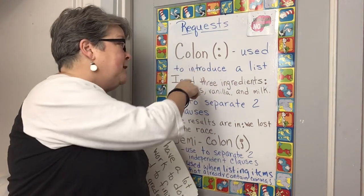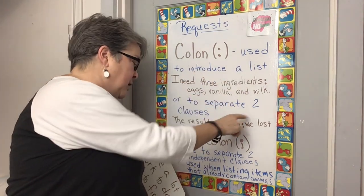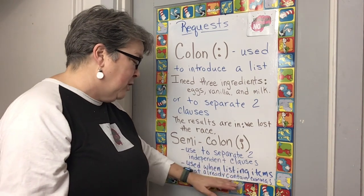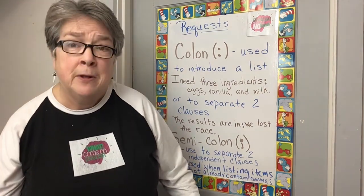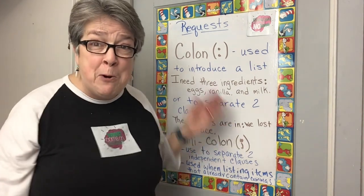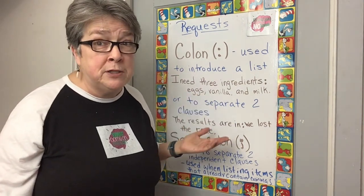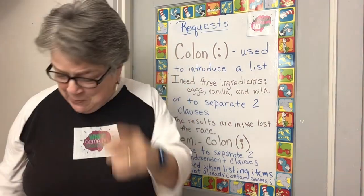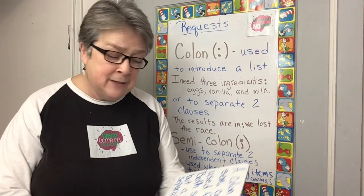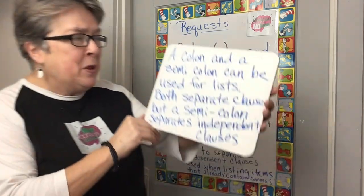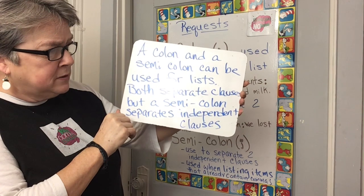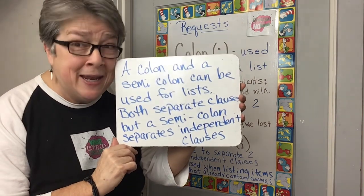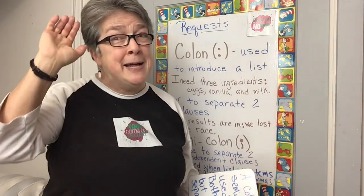Let's review. Colon: used to introduce a list or to separate two clauses. Semicolon: used to separate two independent clauses, or used when listing items that already contain commas. Why does English have so many confusing grammar or punctuation marks that seem like they could be used the same but are slightly different? I don't know. But now you can read and understand the rules — a colon and a semicolon can both be used for lists, and both separate clauses, but a semicolon separates independent clauses. What? Come on, English.